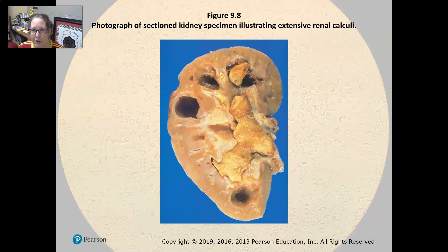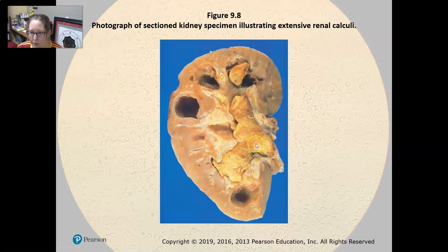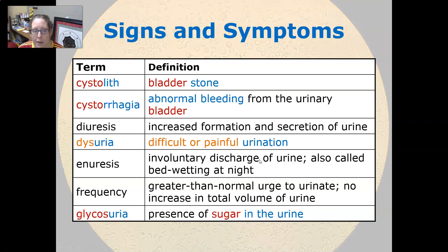Here is a kidney section of the specimen with an extensive renal calculi, or kidney stone. It's really, really big — that must have been really painful. Cystolith is a bladder stone and cystorrhagia is abnormal bleeding from the urinary bladder.